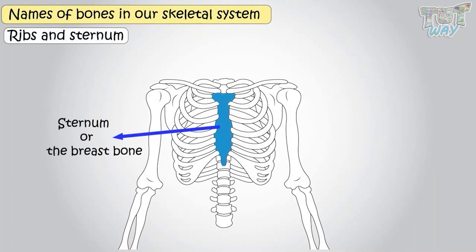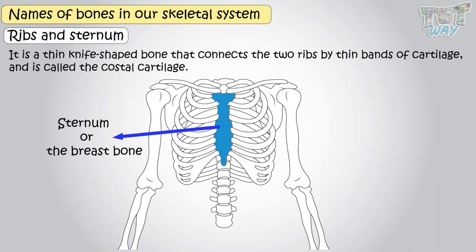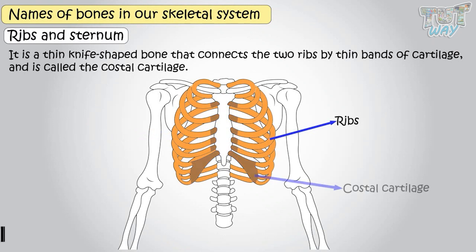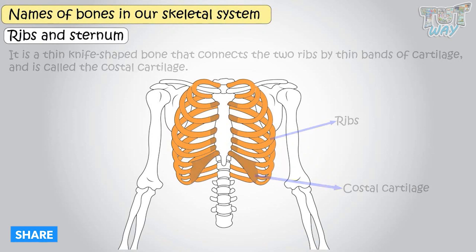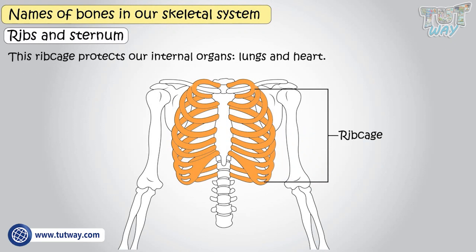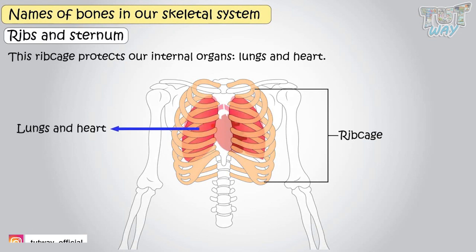This is our sternum or the breastbone. It is a thin knife-shaped bone that connects the two ribs by thin bands of cartilage called the costal cartilage. There are 12 pairs of ribs that together with the sternum form the rib cage. This rib cage protects our internal organs, lungs, and heart.